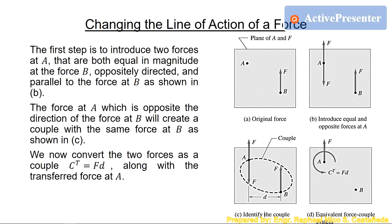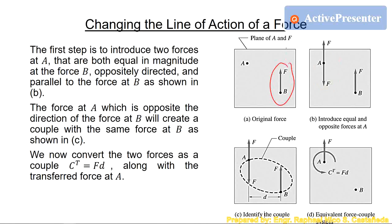The first step is to introduce two forces at the point of transfer, which is point A, that are both equal in magnitude to the initial force at point B, oppositely directed and parallel to the force at B as shown in the figures. We have the original force acting at point B and we want to transfer it to point A. So the first thing we do is apply two forces at the transfer point A — parallel to B and oppositely directed. Since the force at B is going upward, we apply two forces upward and downward at point A.